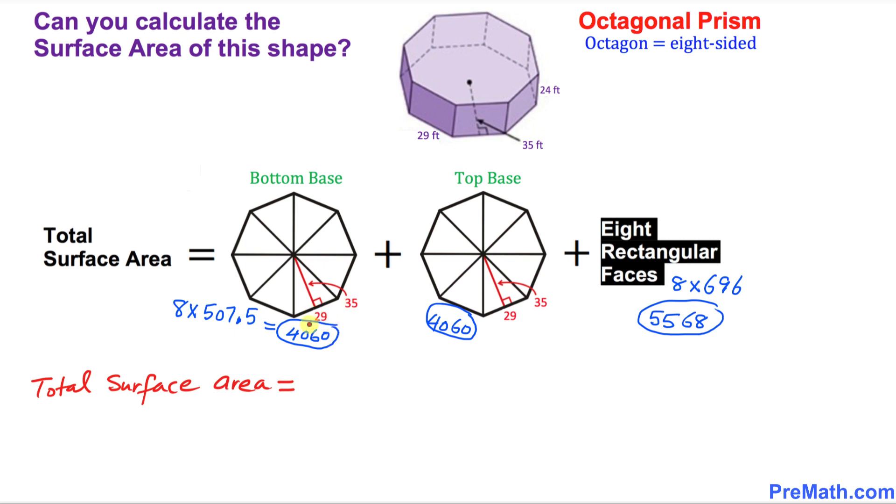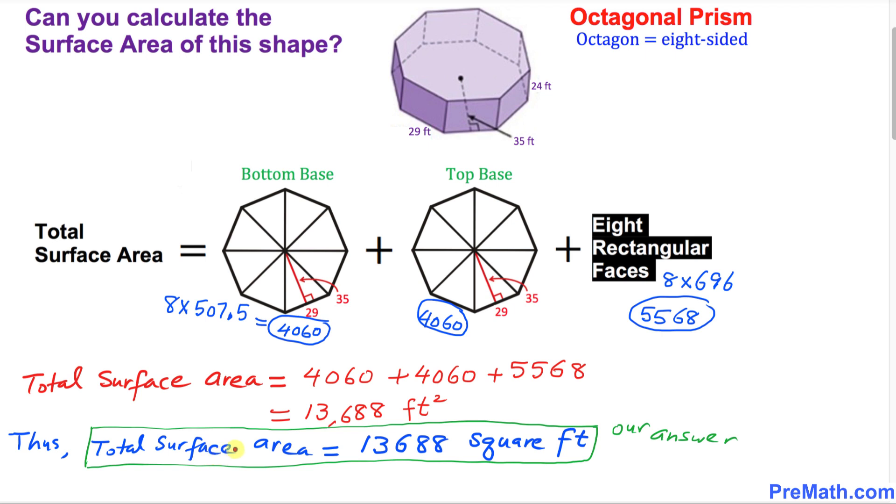So our final step is to simply add up these three numbers. The area of the first octagon is 4060, plus the area of the second one is 4060 as well, and plus the eight rectangles is 5568. If you add them up, that is going to give you 13,688. So thus, the total surface area of this given shape turns out to be 13,688 square feet.